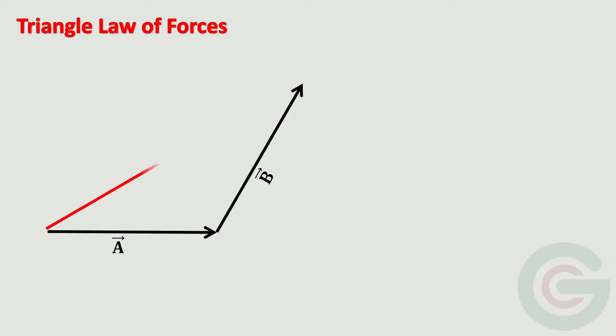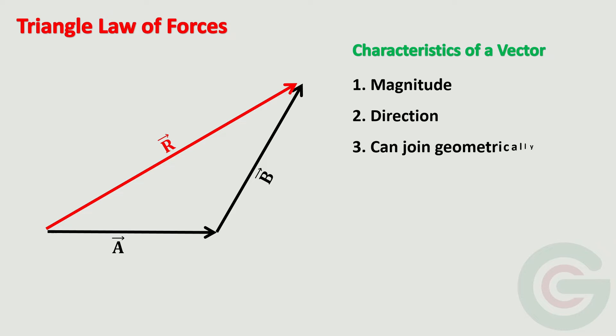Triangle law is basically an addition of vectors to obtain resultant of any given two vectors by geometrical method. We all know that force is a vector quantity. A vector has three characteristics: it has magnitude, it has direction, and the vectors can join geometrically to form polygons.